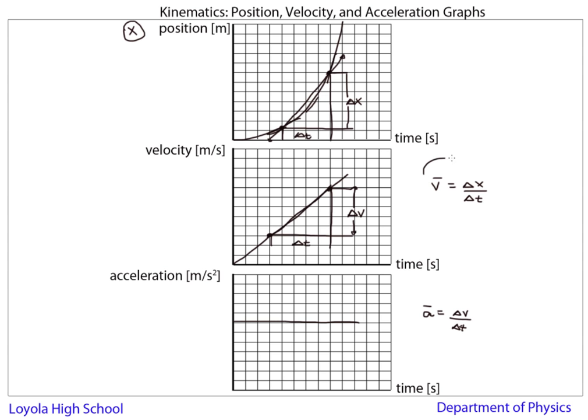Here you can see the relationships between the equations, the average quantities, and the graphs. The moral of the story is that the slope between any two points on a position versus time graph, which would be given to you, is the average velocity.